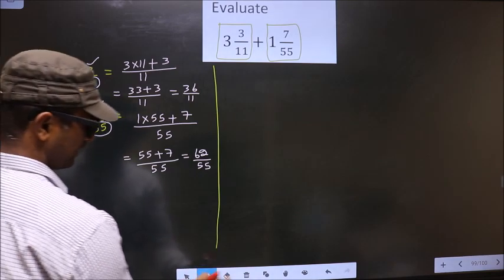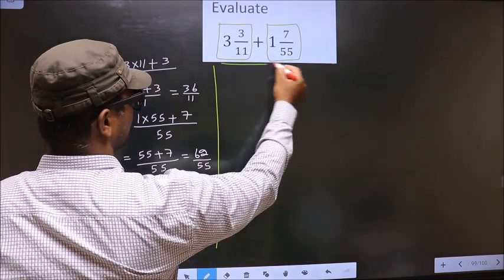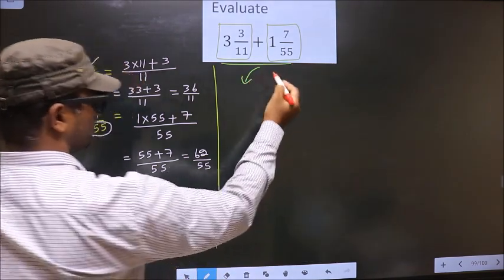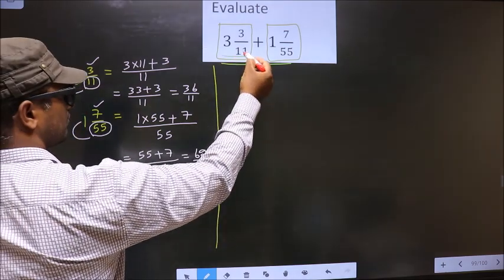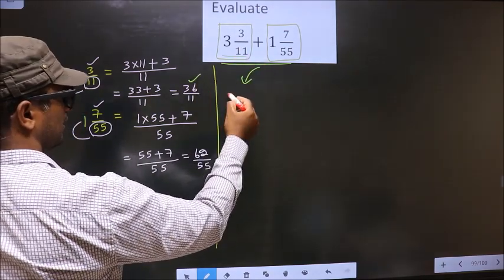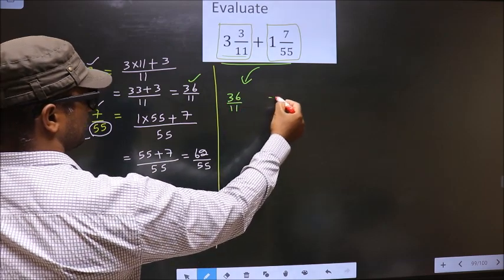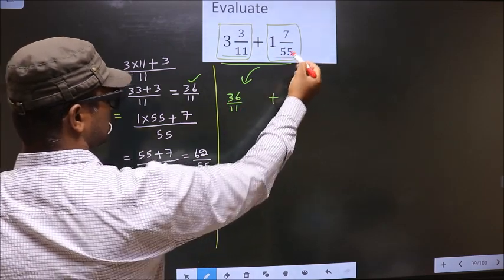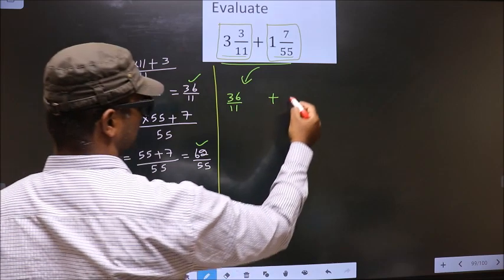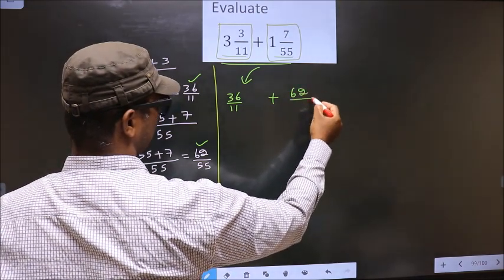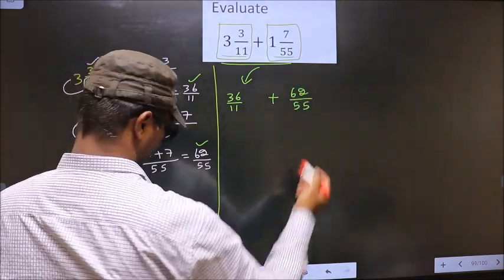Now, this entire thing will change. In place of this, we write this one, that is 36 by 11, plus in place of this, this one: 62 by 55.